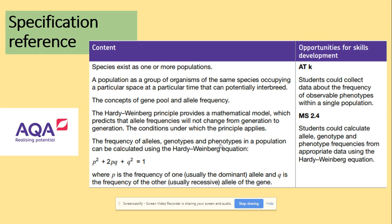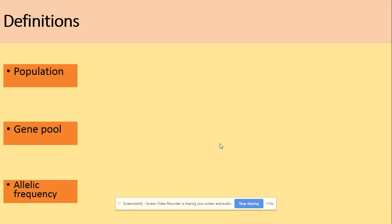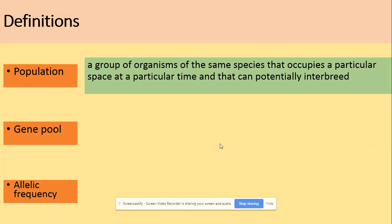So this is our specification for today and we will start with the key terminology. What is a population? It's a group of organisms of the same species that occupies a particular space at a particular time and they can interbreed to produce fertile offspring.